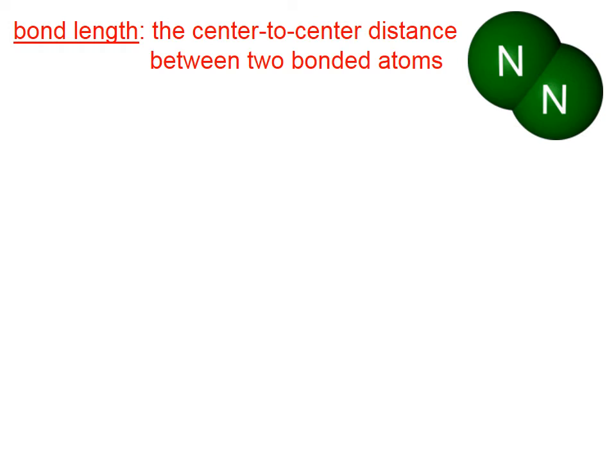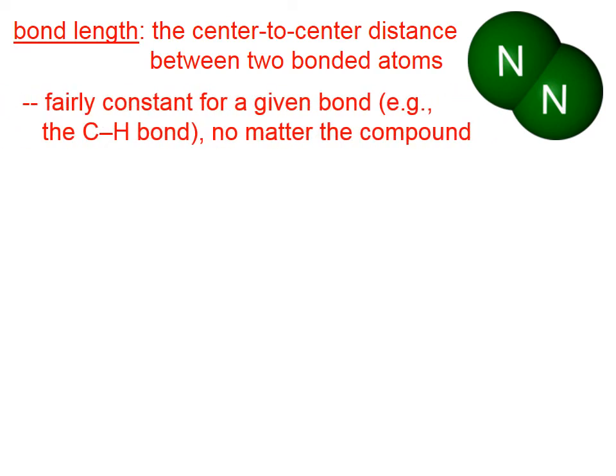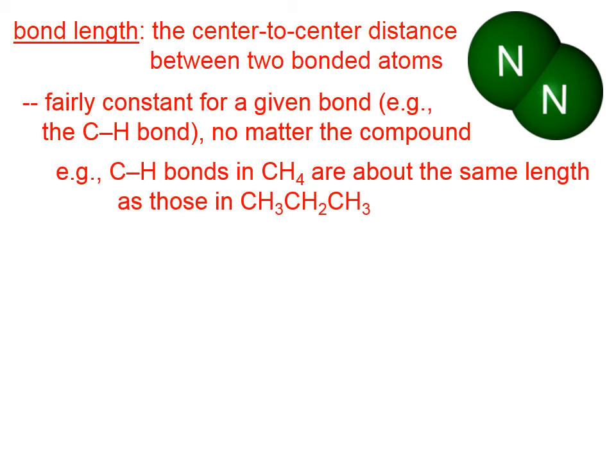As mentioned on the previous slide, the bond length is the center to center distance between two bonded atoms, it's the distance between their nuclei. The bond length is fairly constant for a particular bond, for example, a carbon-hydrogen bond, no matter what compound we're talking about.